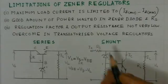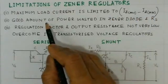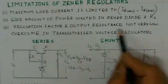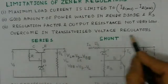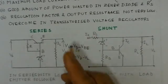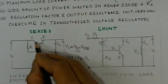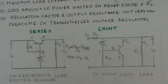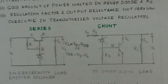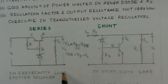Ordinary zener regulators have limitations: maximum load current is limited to IZ max minus IZ min, a significant amount of power is wasted in the zener diode and series resistance, and the output resistance is not very low. To overcome these problems, transistorized voltage regulators are commonly used. There are two types: series type, where the transistor is in series with the load, and shunt type, where the transistor is in shunt with the load.